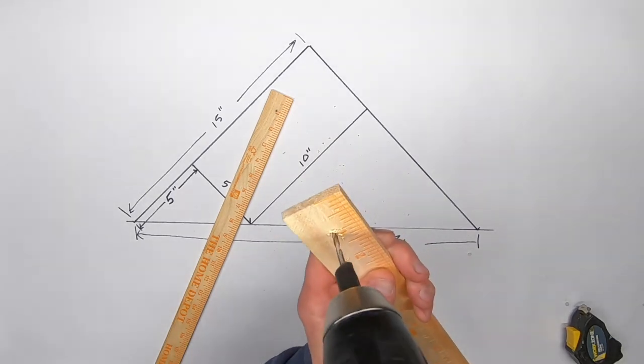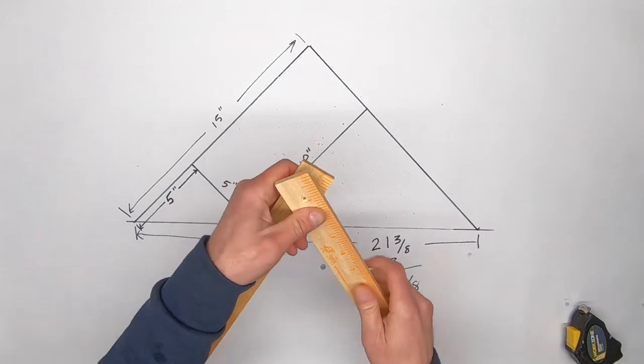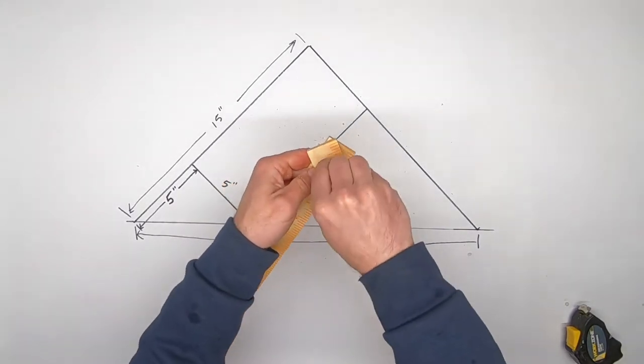I start assembly by drilling a hole at the one inch mark on two of the yardsticks, then connect them together using a machine screw and a nut. Keep it snug but loose.